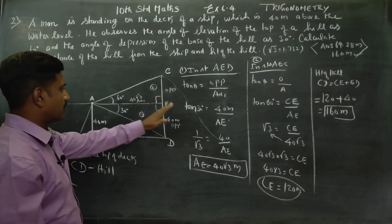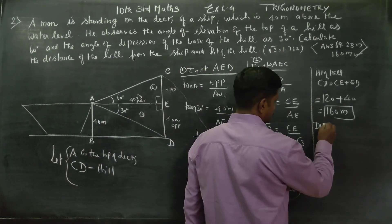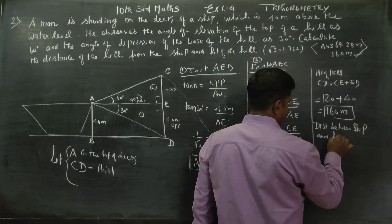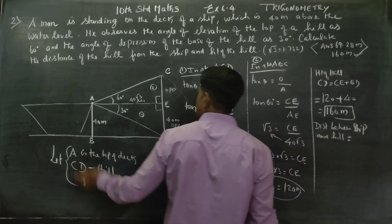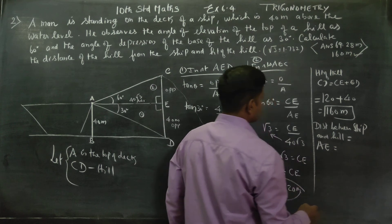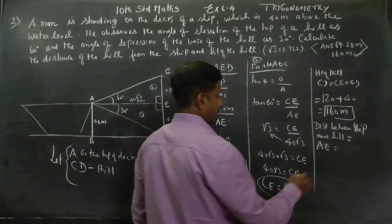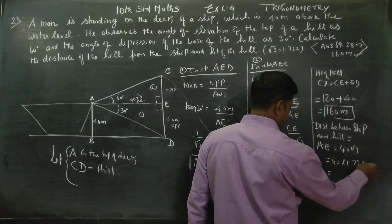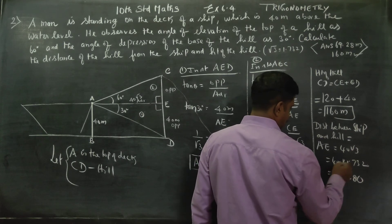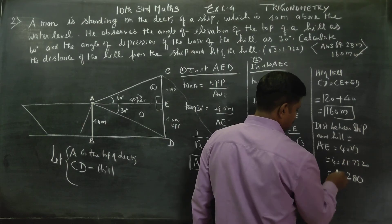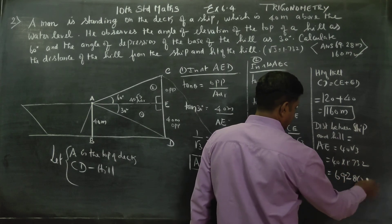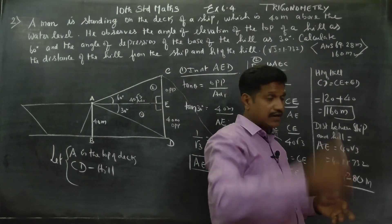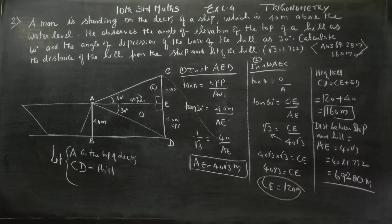The distance between the ship and the hill is equal to AE. AE is 40 root 3. Calculating: 40 into 1.7320 — 4 times 2 is 8, 4 times 3 is 12, carry 1, giving 69.28 meters. So the distance between the ship and the hill is 69.28 meters, and the height of the hill is 160 meters.